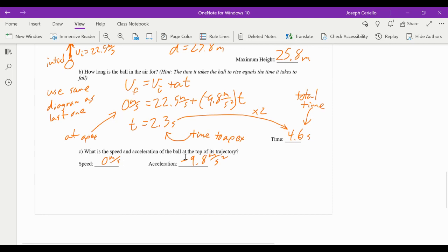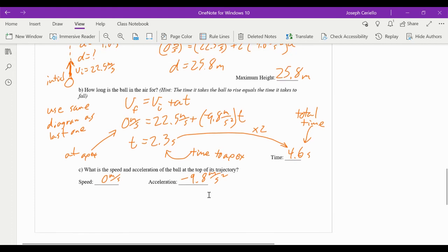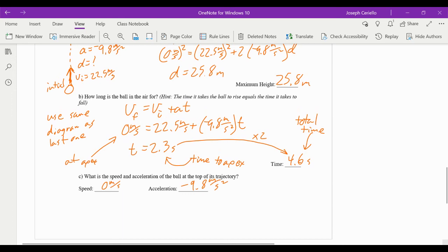These are just some review questions. Probably should have put these first. What is the speed and acceleration of the ball at the top of its trajectory? The speed is 0 meters per second, and the acceleration is negative 9.8 meters per second squared. The magnitude of that number, 9.8 meters per second squared. But most importantly, it is accelerating downward all the time. Good luck, and if you have any questions, let me know.